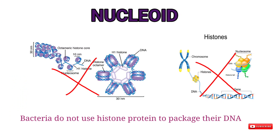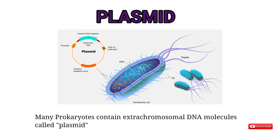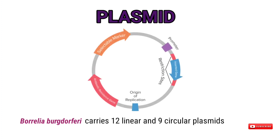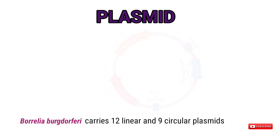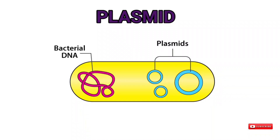In addition to the genetic material present in the nucleoid, many prokaryotes and some yeasts and other fungi contain extrachromosomal DNA molecules called plasmids. For example, Borrelia burgdorferi carries 12 linear and 9 circular plasmids. Plasmids play many important roles in the lives of organisms that carry them. They are small double-stranded DNA molecules that can exist independently of the chromosome; most known plasmids are circular, but linear plasmids possess special structures or sequences at their ends to prevent degradation and permit replication.